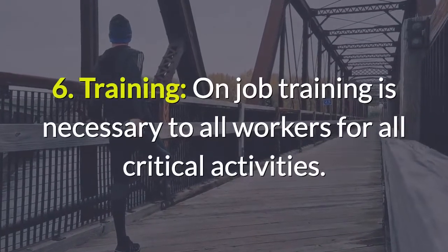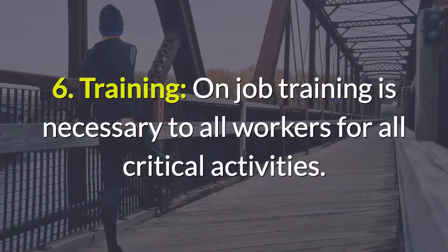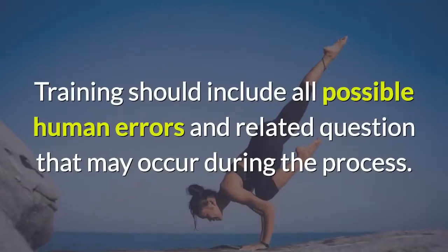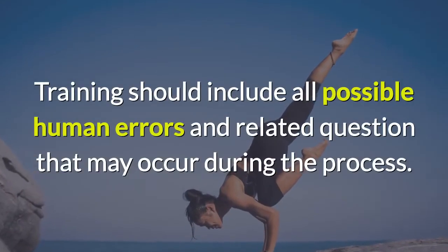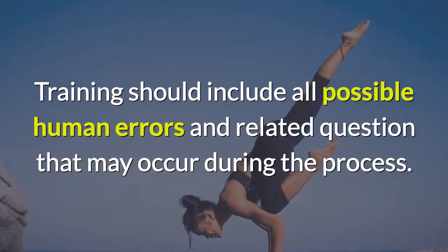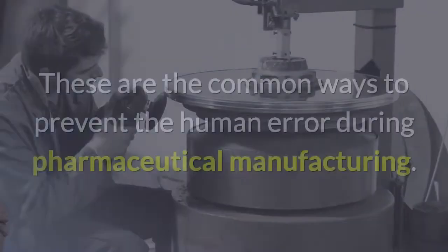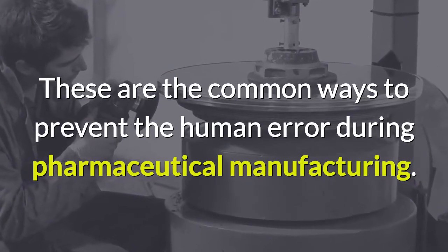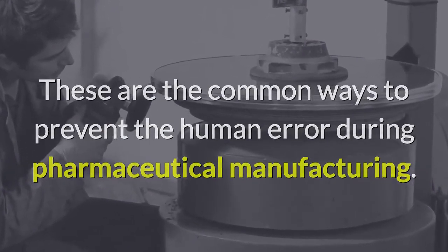6. Training. On-job training is necessary for all workers for all critical activities. Training should include all possible human errors and related questions that may occur during the process. These are the common ways to prevent human errors during pharmaceutical manufacturing.